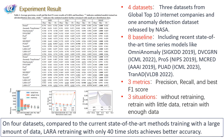We conducted experiments on four datasets using eight baselines and three metrics under three situations. On four datasets, compared to the current state-of-the-art method training with a large amount of data, our retraining with only 1/40th of the data achieves better accuracy.